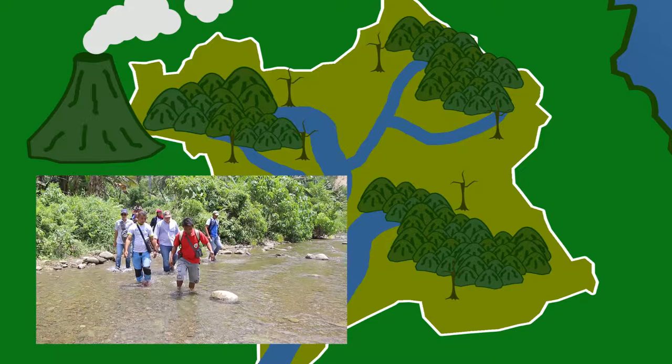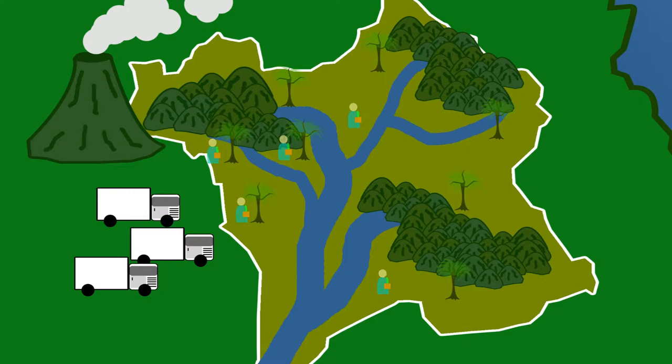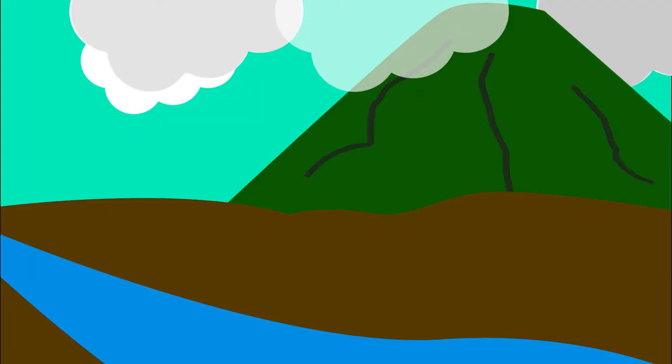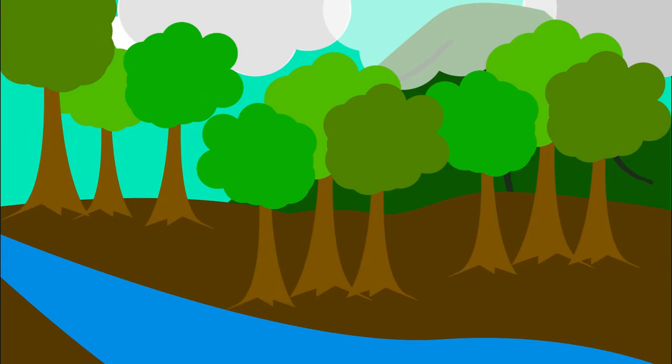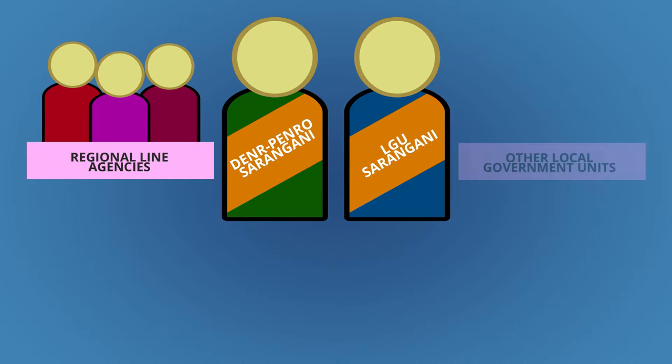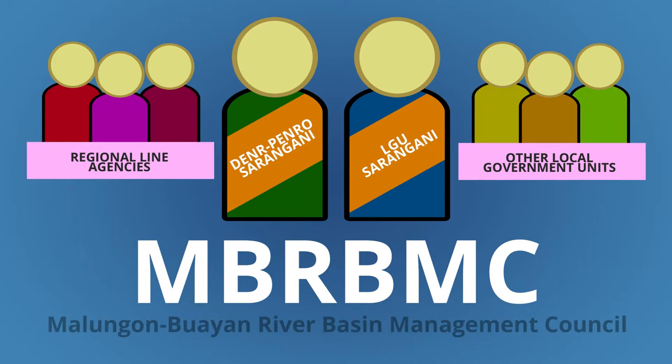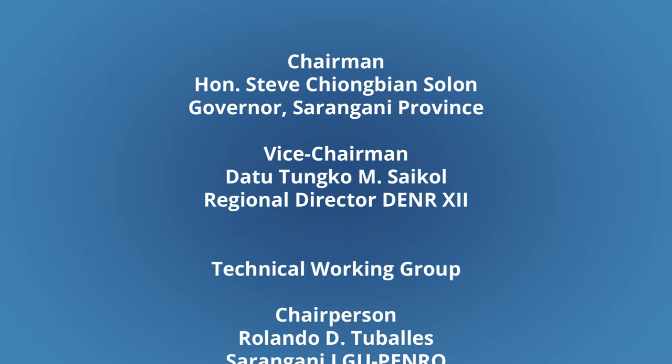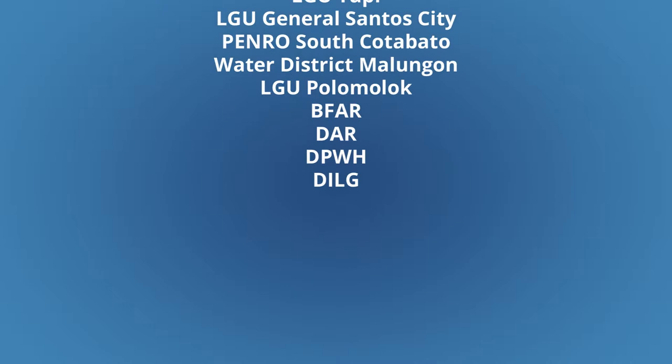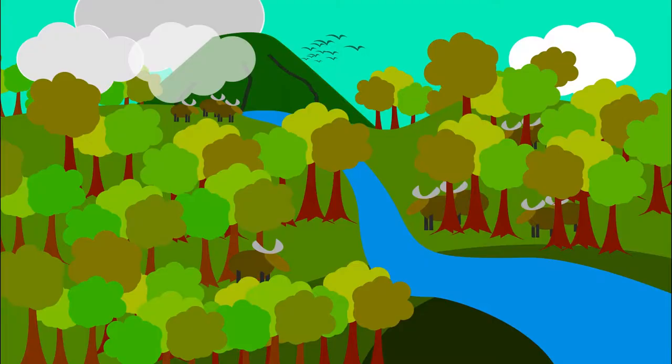Some efforts have been made by concerned government institutions to help alleviate the river basin from deforestation. Interventions include tree planting in the upland and mangrove planting by the bay. But these will not succeed if worked on by only a few. This is why, in 2014, the DENR Penrose Sarangani, in partnership with the provincial government of Sarangani, regional line agencies, concerned local government units, and other stakeholders, facilitated the organization of the Malungan-Buayan River Basin Management Council. The Council, headed by Sarangani Governor Steve Chiongbian Solon, shall oversee the implementation of all development undertakings in the river basin.